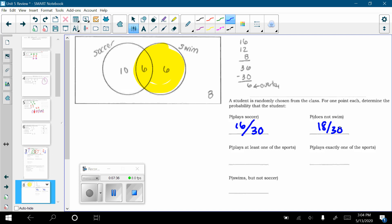The next one says, find the probability that they play at least one of the sports. The part of the Venn diagram that that is represented by is this entire part that I now have highlighted in yellow. So, I'm going to take and add 6 plus 6, which is 12, plus 10, which is 22. And say, 22 out of the 30 play at least one sport.